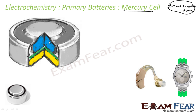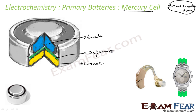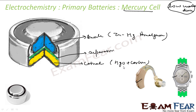In the mercury cell, one part is the anode, another is the cathode (the yellow part), and the green part is a separator. For the anode, zinc-mercury amalgam is used. For the cathode, HgO and carbon are used. The electrolyte is a paste of KOH and ZnO.